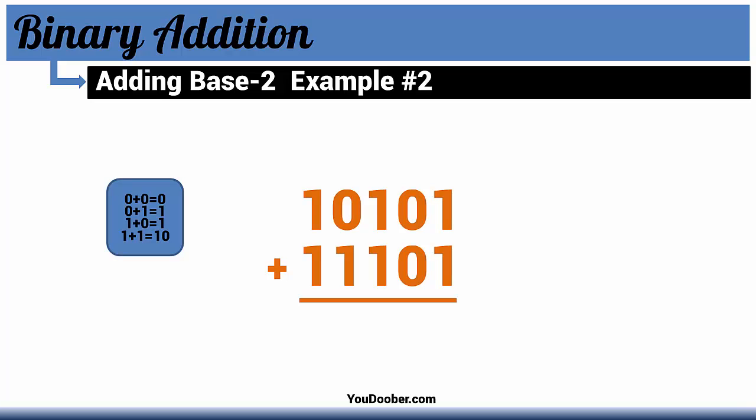So starting from the right, working left, 1 plus 1 equals 1, 0, correct? So we put our 0 down, carry our 1.